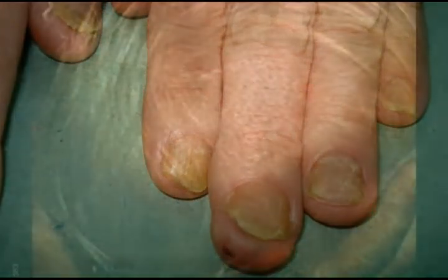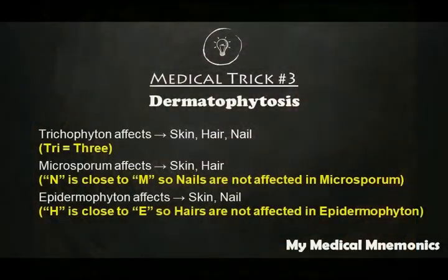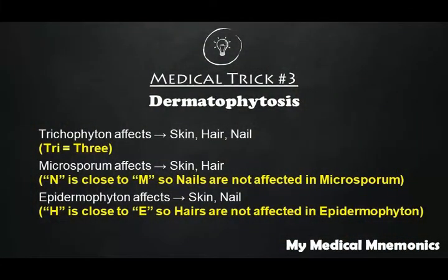It affects three structures: skin, hair, and nail. Importantly, dermatophytes are divided into three genera — Trichophyton, Microsporum, and Epidermophyton — and different genera affect different structures. For example, Trichophyton affects skin, hair, and nail.